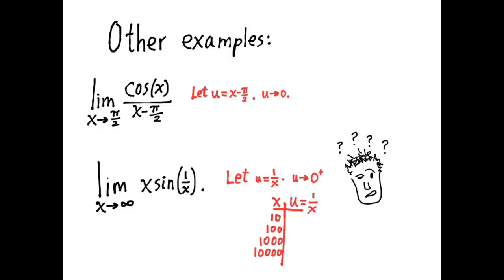Try x equals 10, 100, 1,000, 10,000. Those are values of x that are approaching infinity. Fill in the rest of the table, and I think you'll see that u is approaching 0 from the right.